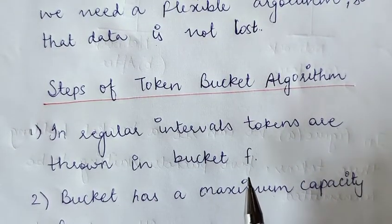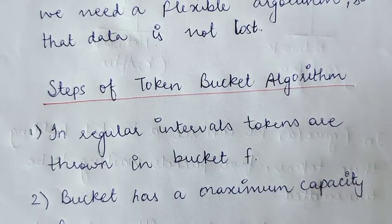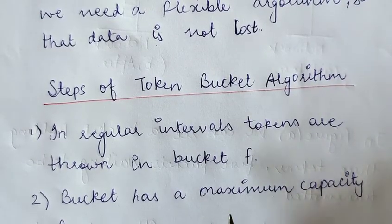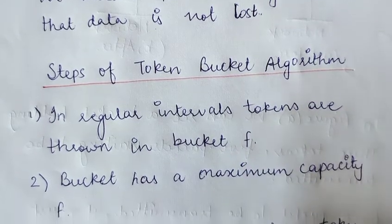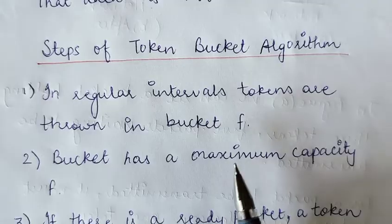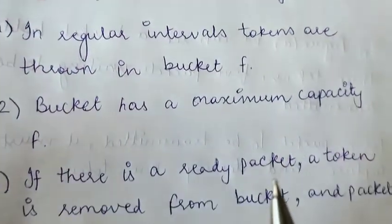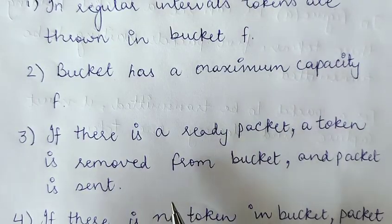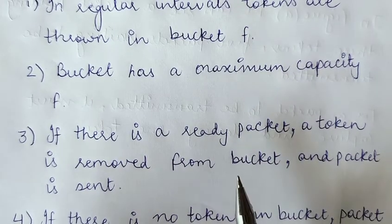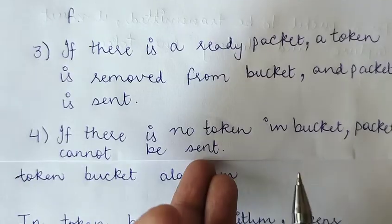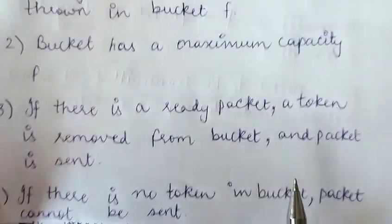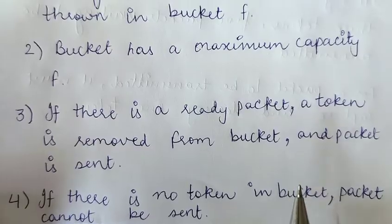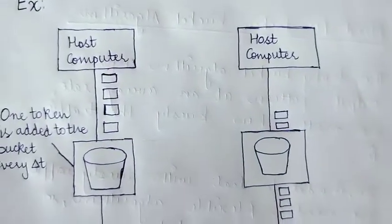The steps of the token bucket algorithm are as follows: In regular intervals, tokens are thrown into the bucket. Tokens represent your data packets. The bucket has a maximum capacity, denoted f. If there is a ready packet — a packet ready to be transmitted — a token is removed from the bucket and the packet is sent. If there is no token in the bucket, the packet cannot be sent. No token means no packet can be sent.